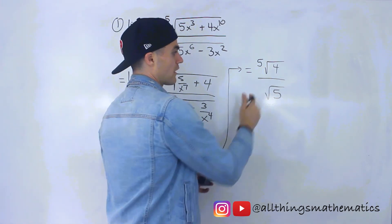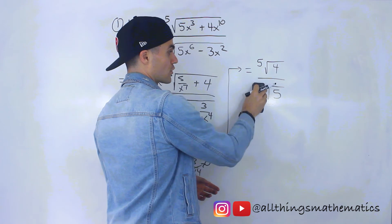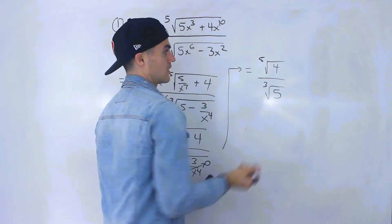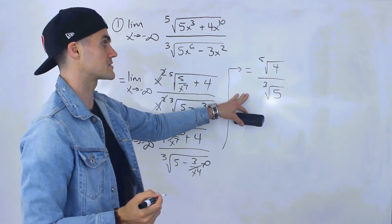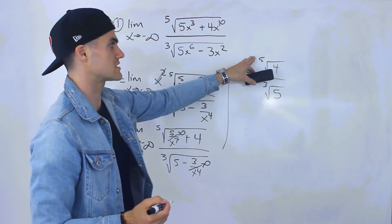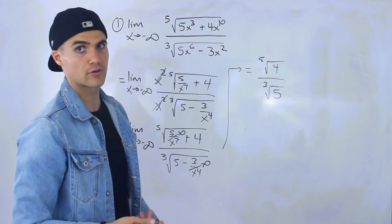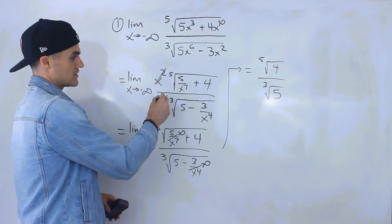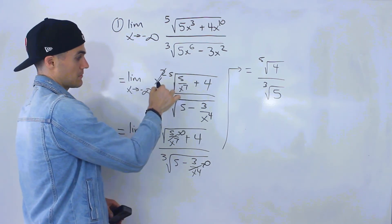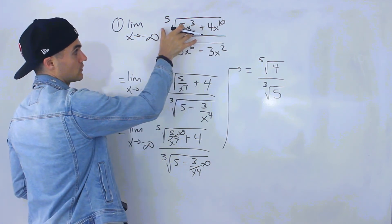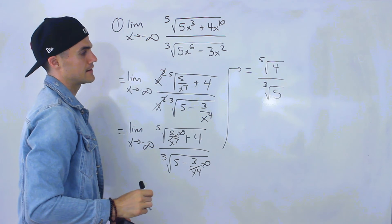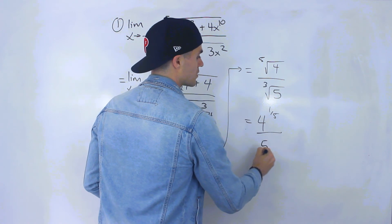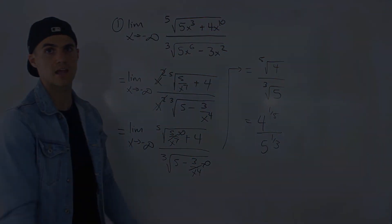That is the final answer: the fifth root of 4 over the third root of 5 — not 5 times root 4, but the fifth root of 4, and not 3 times root 5, but the third root of 5. Not the prettiest answer, but that's what this limit evaluates to. This can also be written as 4^(1/5) over 5^(1/3), which is the exact same thing. Be on the lookout for x² cancellations, especially when you have one term each in numerator and denominator.